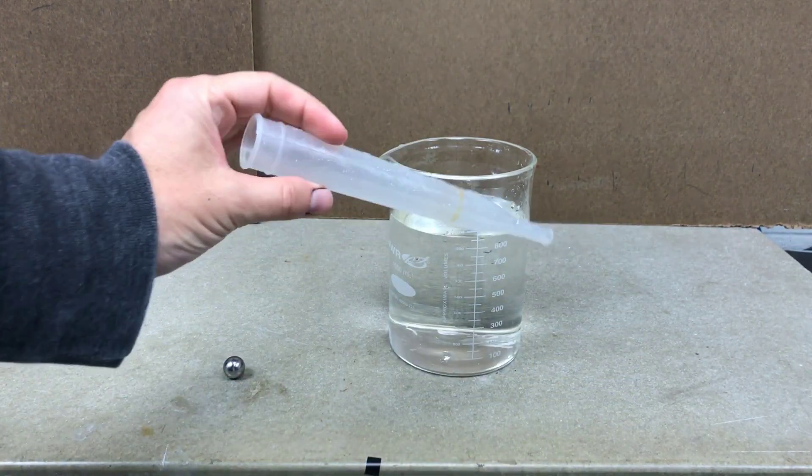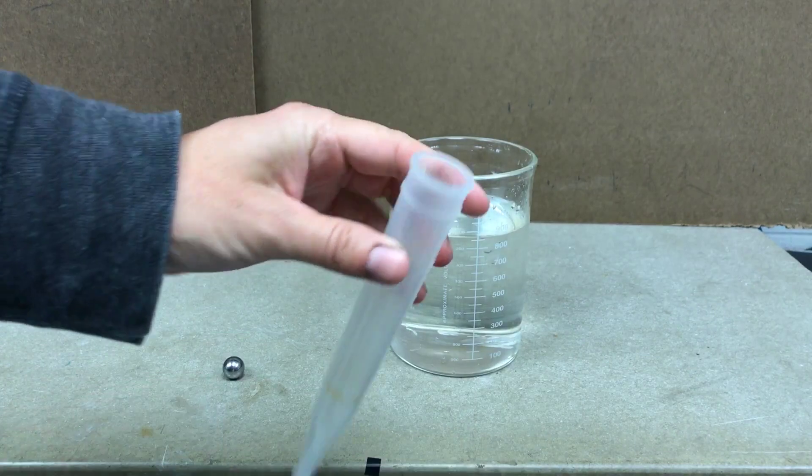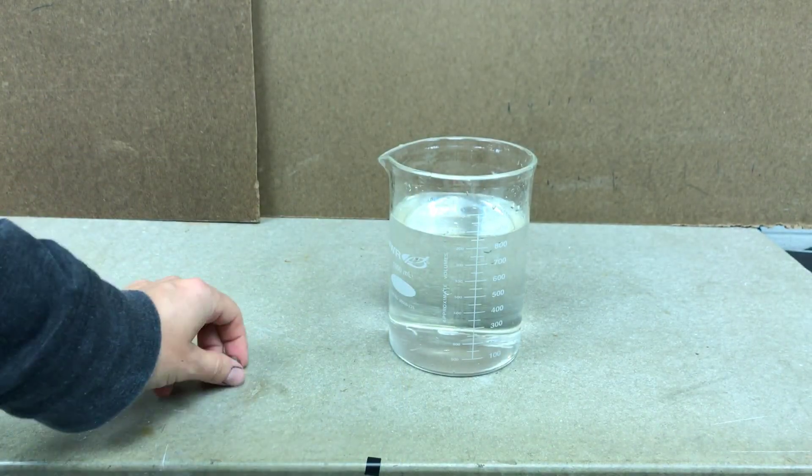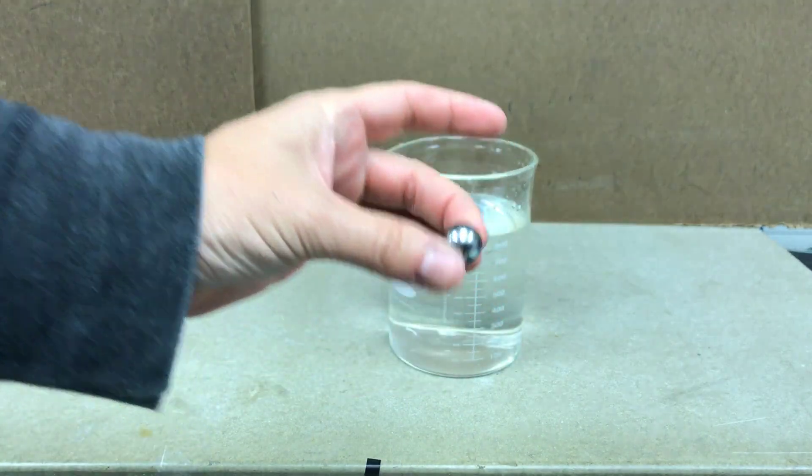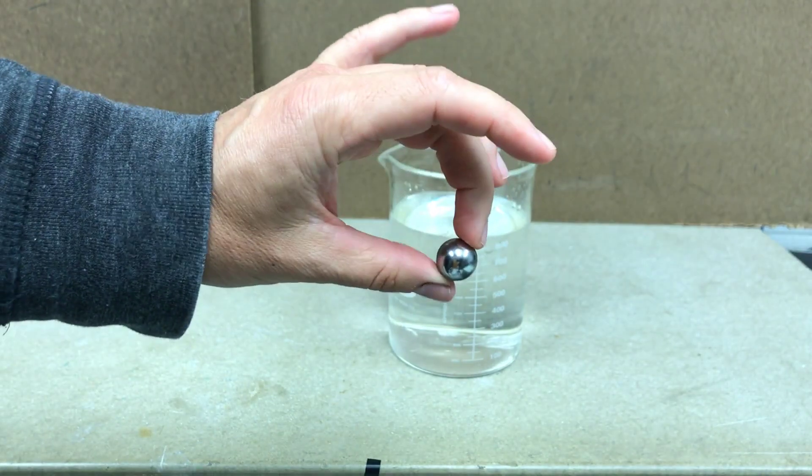And this is a part of a turkey baster. I pulled the top off. And then I need a ball. This is a ball bearing, but you can use a marble or whatever.